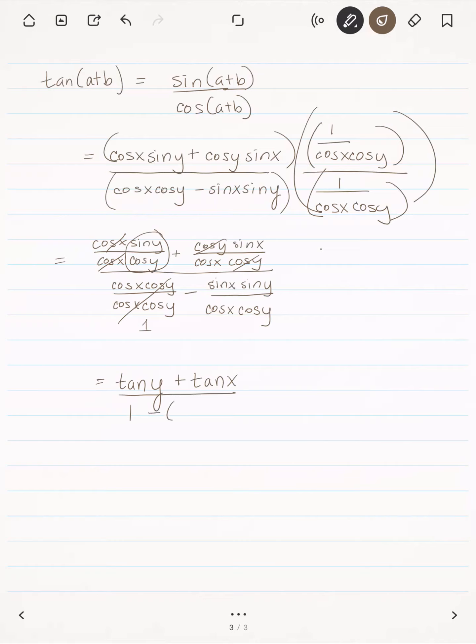And I can separate out these. I have the sine of x over the cosine of x times the sine of y over the cosine of y, which are again tangent functions. So that's equal to tangent of y plus tangent of x over 1 minus the tangent of x times the tangent of y.